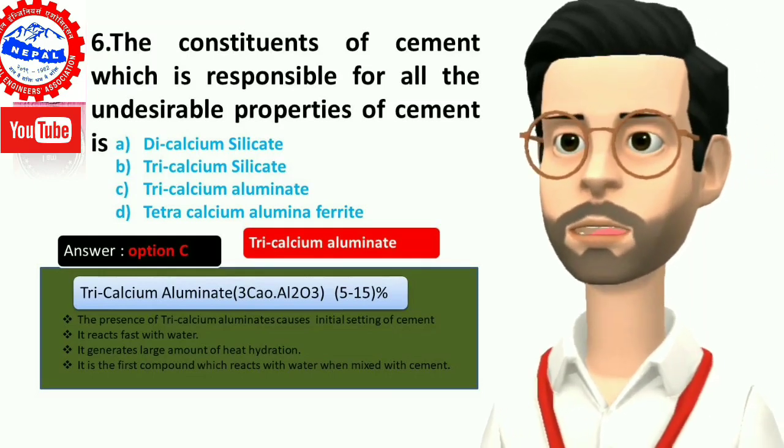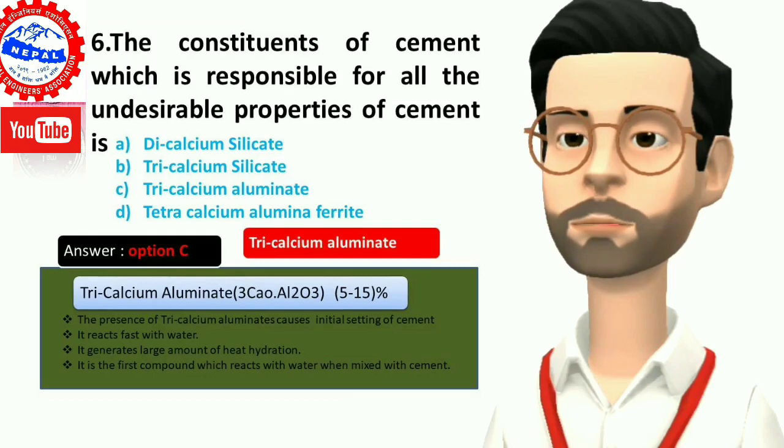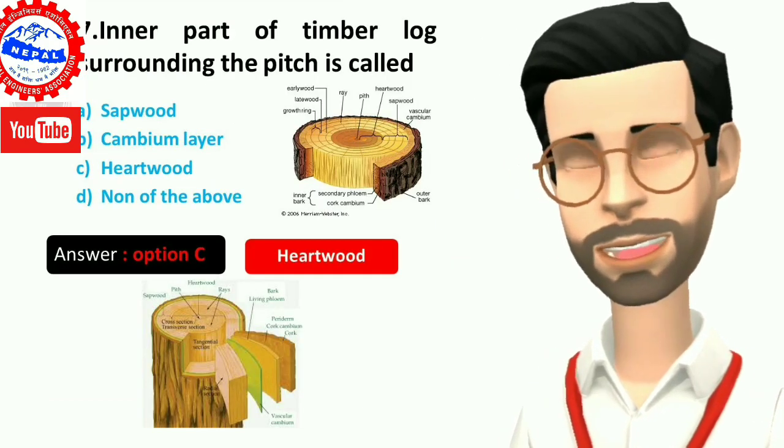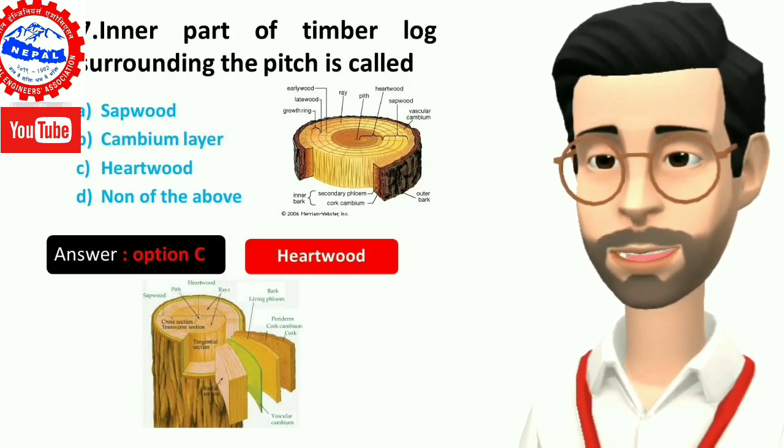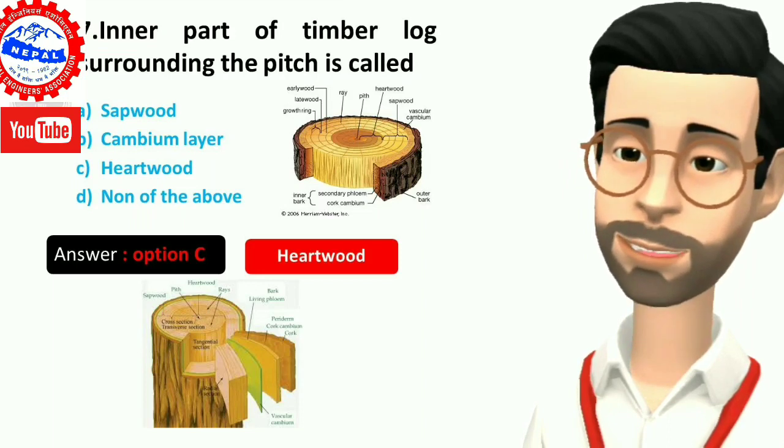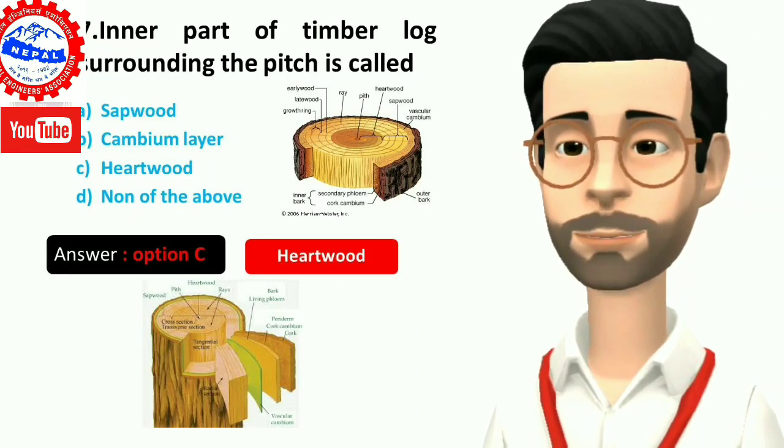Seven, inner part of timber log surrounding the pith is called: A) sapwood, B) cambium layer, C) heartwood, D) none of the above. Answer is option C, heartwood.